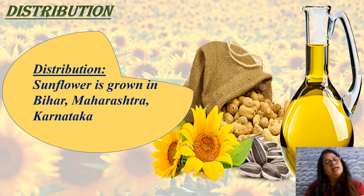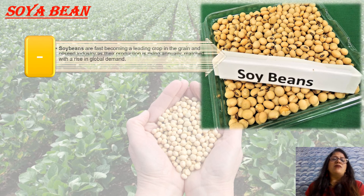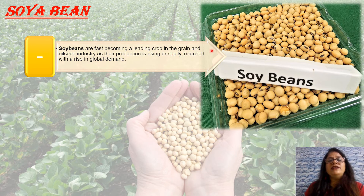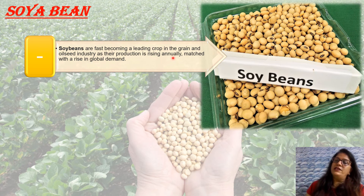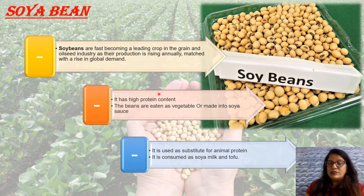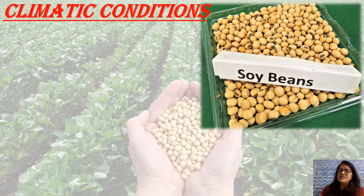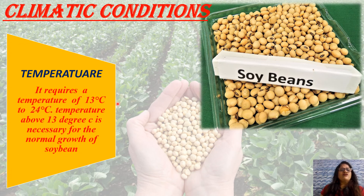For proper germination, sunflower requires enough moisture in the soil during the first 45 days and should not receive heavy rain when flowering. Yield increases considerably if the crop is irrigated just before flowering. Distribution: sunflower is grown in Bihar, Maharashtra, and Karnataka on a large scale. Now we will discuss soybean. Soybean is fast becoming a leading crop in India's grain and oil seed industry as production rises annually to match global demand. It has high protein content; the beans are eaten as vegetables or made into soya sauce.